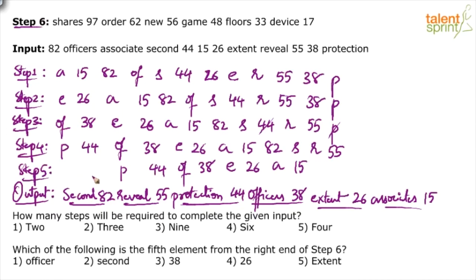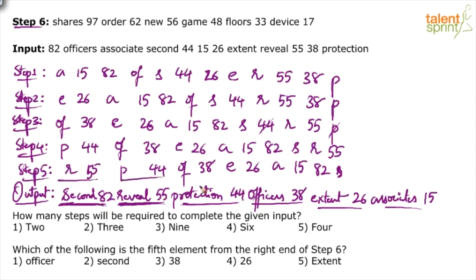In step five, we have protection 44, officers 38, extent 26, associates 15 in place. Bring 'reveal' and 55 to the front. What is left is 82 and 'second'. In step six, reveal and 55 come inside, and 82 and second are brought to the first positions — swapping so the word comes first: second 82, reveal 55, protection 44, officers 38, extent 26, associates 15. This is the complete output.